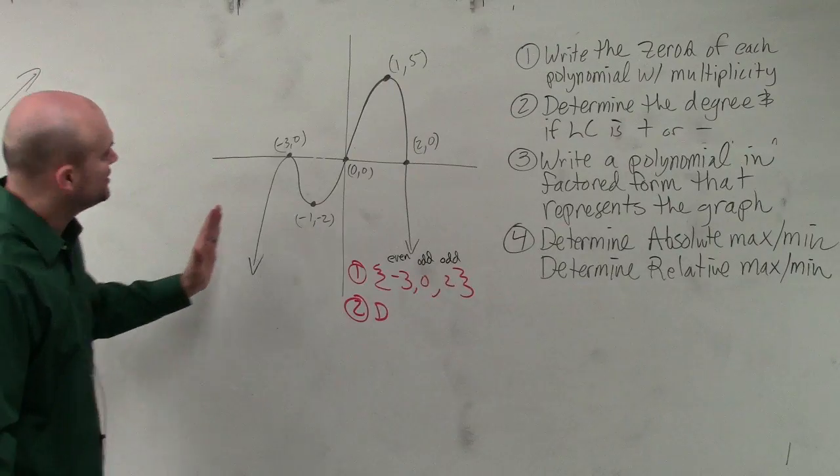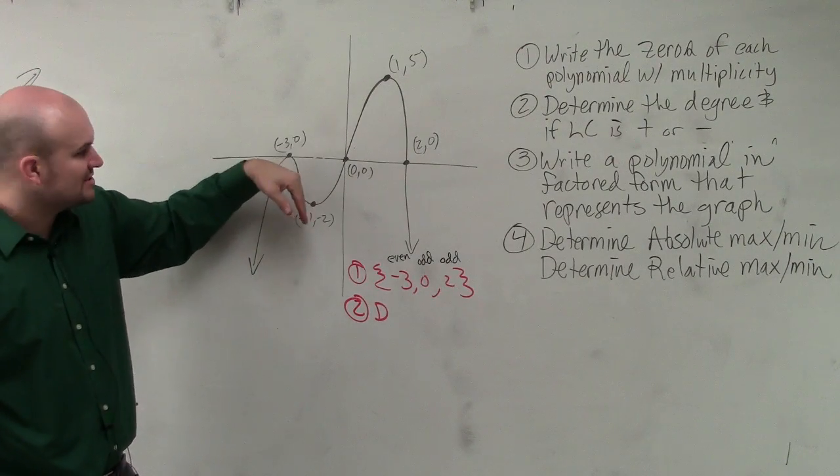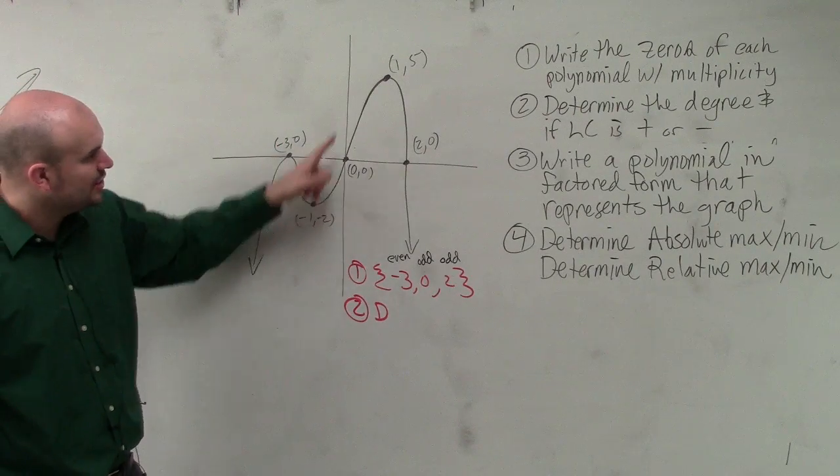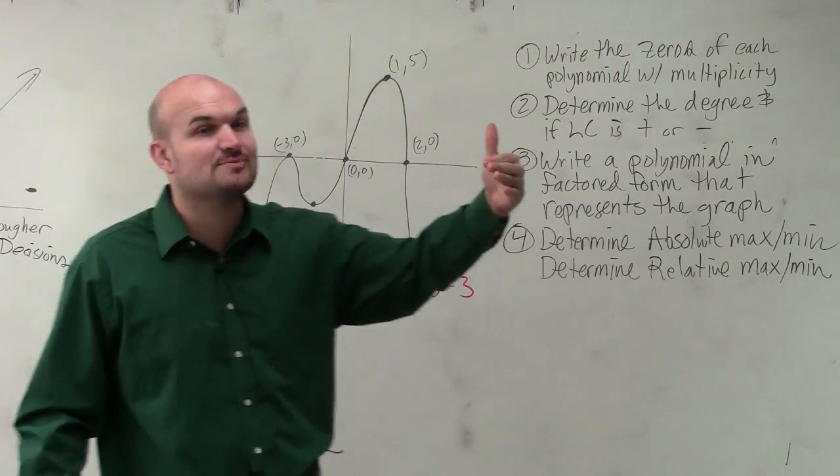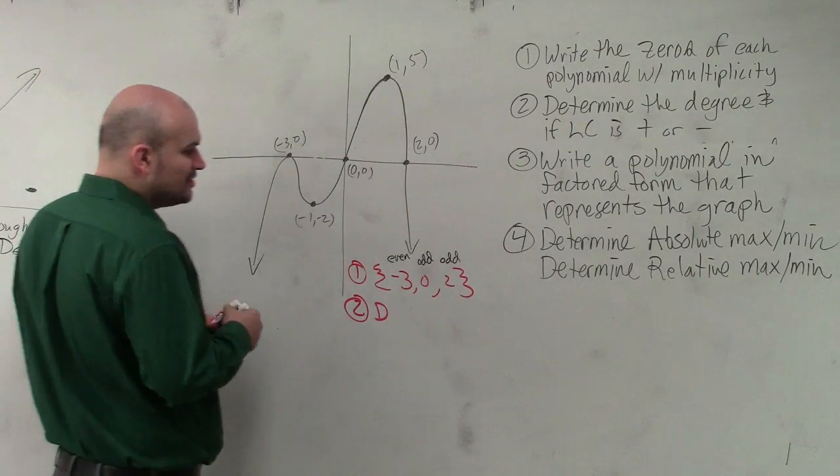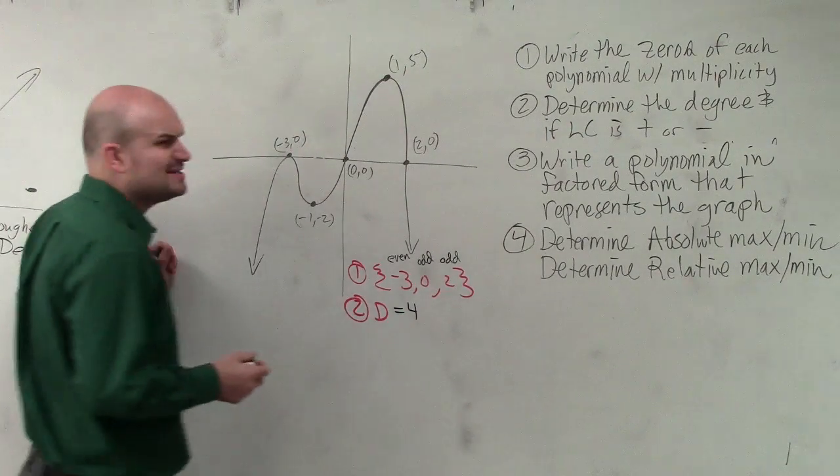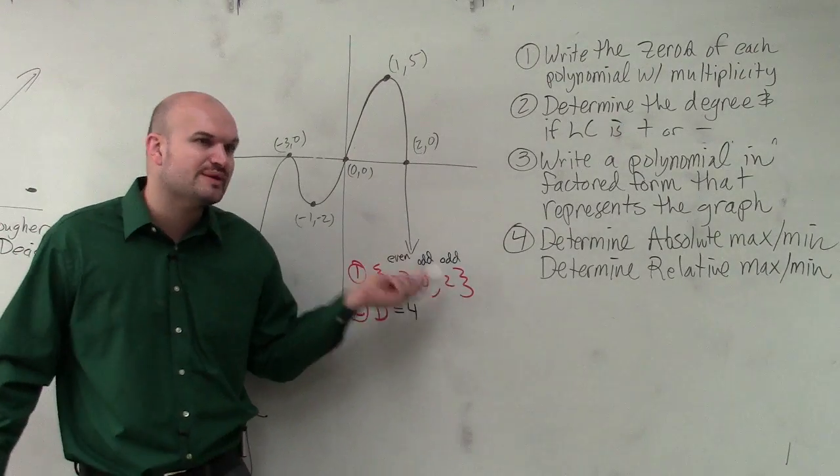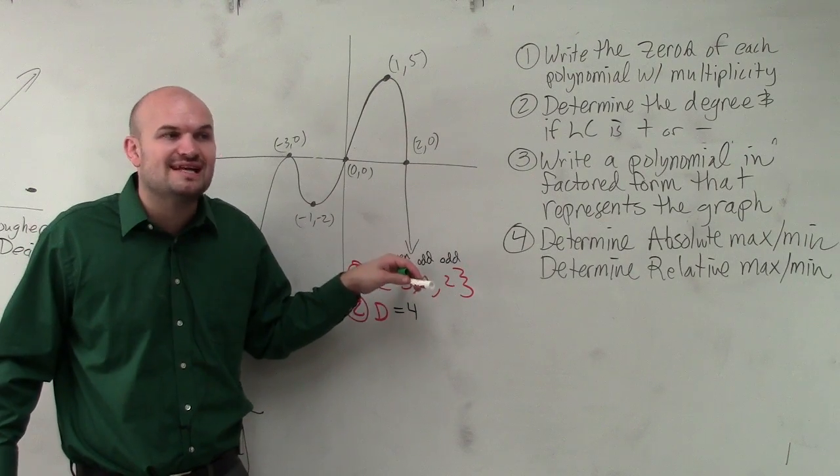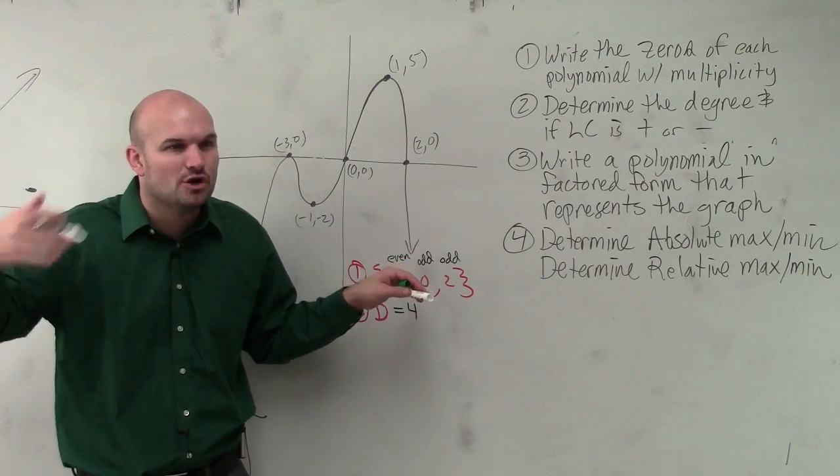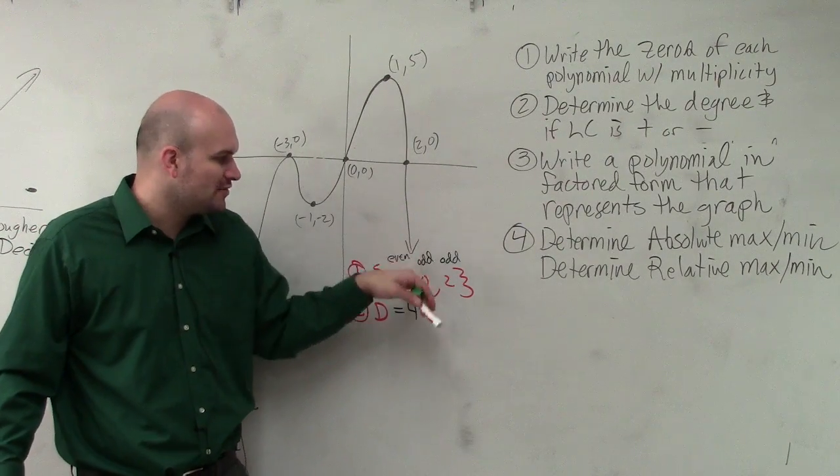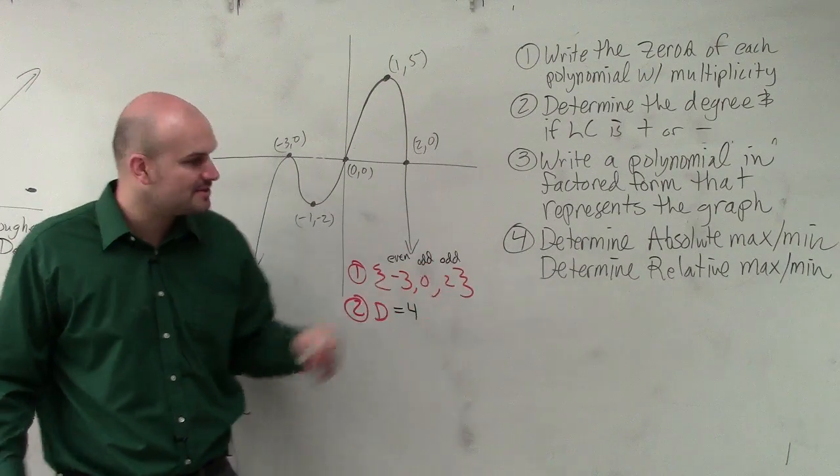So you can see this graph is increasing then it decreases, it's decreasing then increasing. So these are two turning points. I have one, two, three turning points. So if I add one, that tells me the degree is 4. Now you might say, well then how does it have three zeros? Remember, if you have a multiplicity that's even, that means that zero occurs twice. So in reality, it's like this could occur twice, 3 and 4.